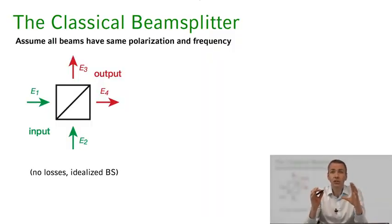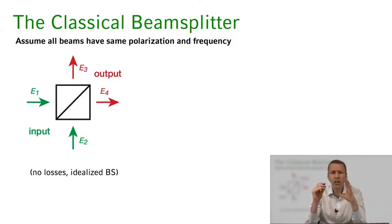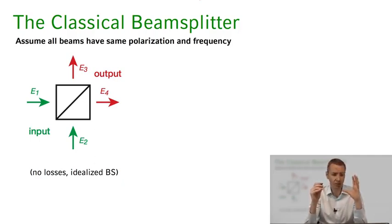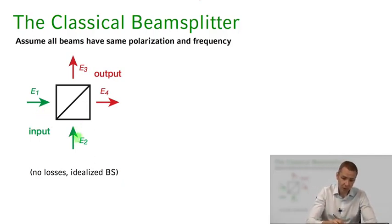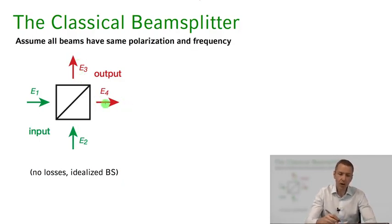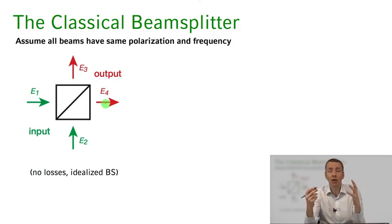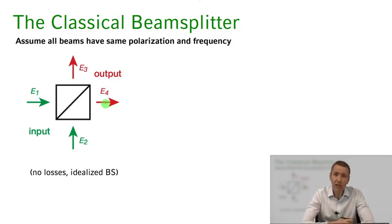Here is an abstract picture of a beam splitter — we don't need to go into the details of optics of how it works. We'll just make some very general assumptions about what needs to be fulfilled. It's a device with two input ports e1, e2 and two output ports e3, e4, where electromagnetic fields go in and come out. We want to know the input-output relations: how the output fields are related to the input fields.